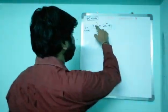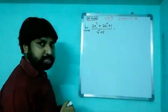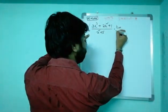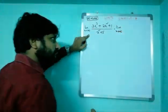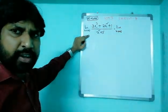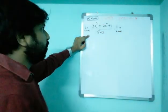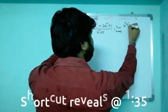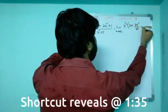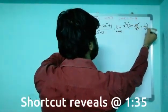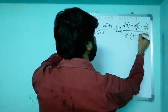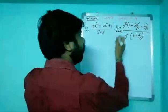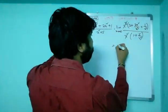The first case is where numerator highest power is greater than denominator power. Here numerator is x cube and denominator is x square. As usual, first the standard method, then the shortcut — with the shortcut we can crack it within half a second. So taking x cube as common in the numerator: 3 plus 2/x² plus 1/x³, and in the denominator taking x square as common: 1 plus 5/x². The x squares cancel twice, leaving x remaining in the numerator.